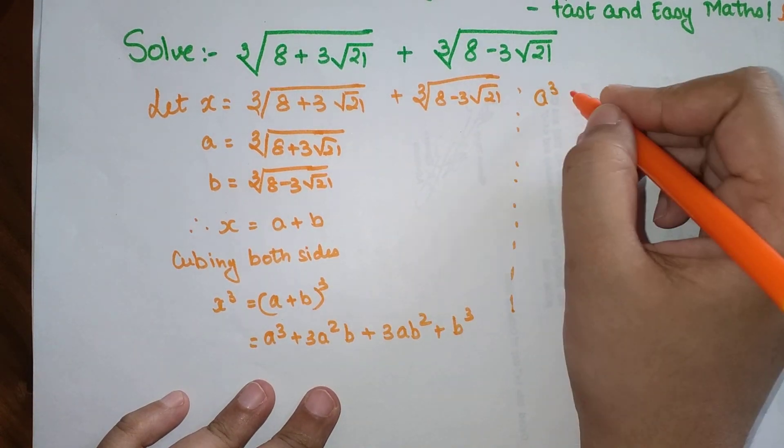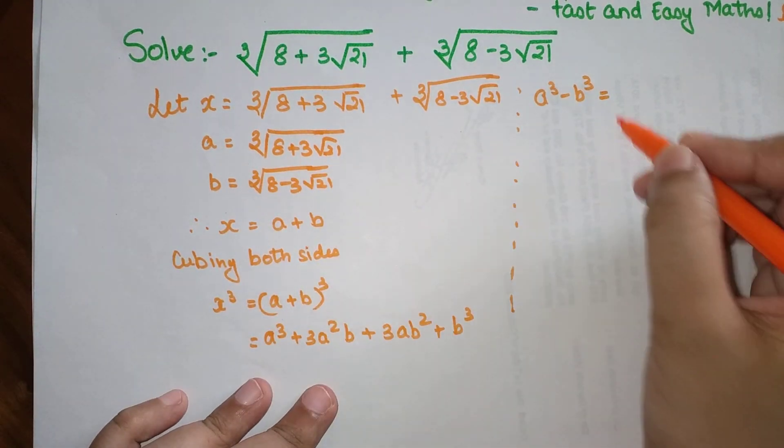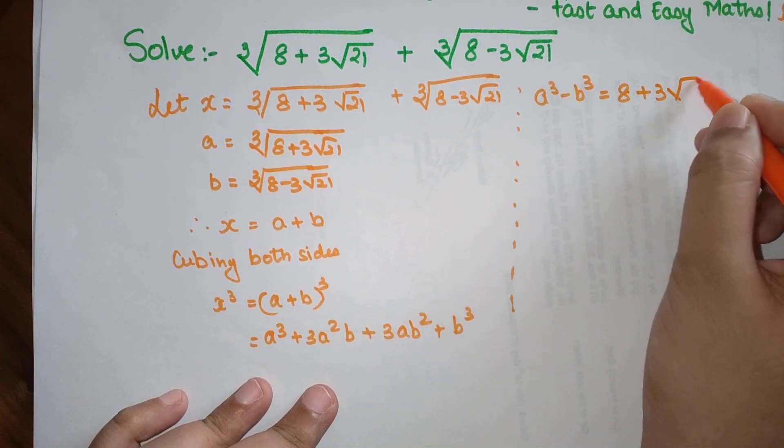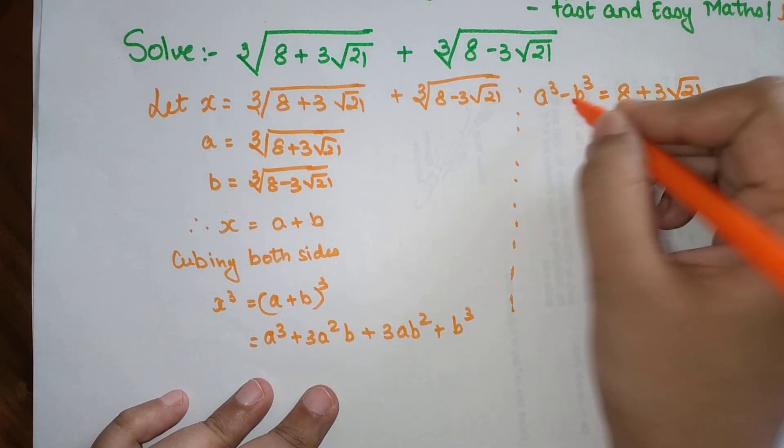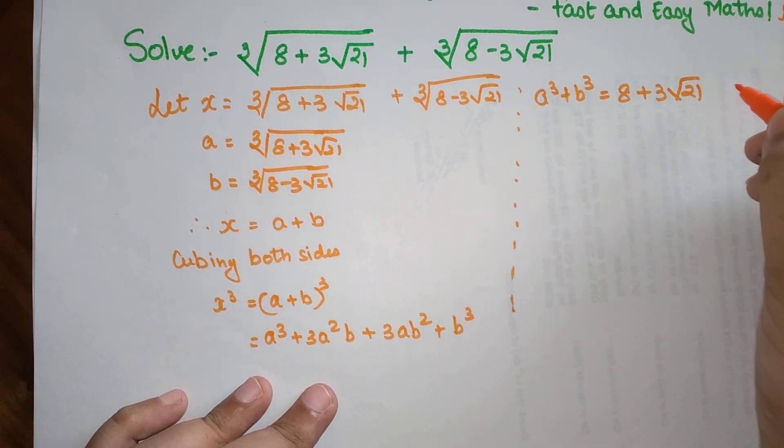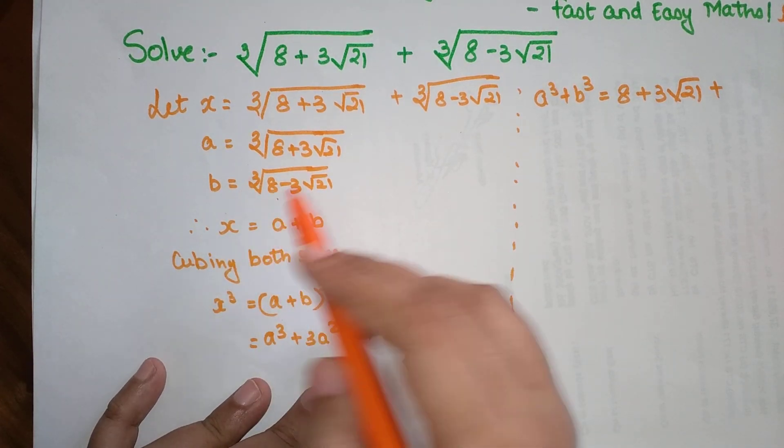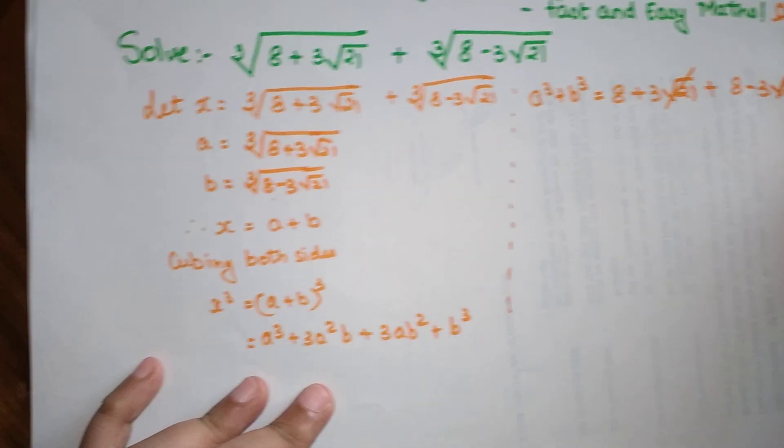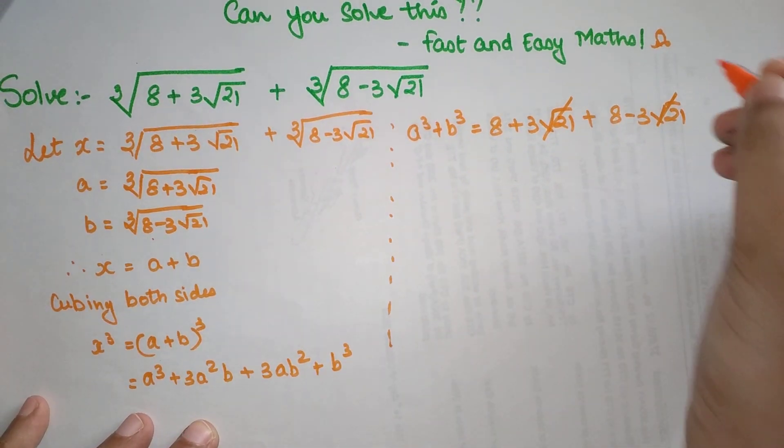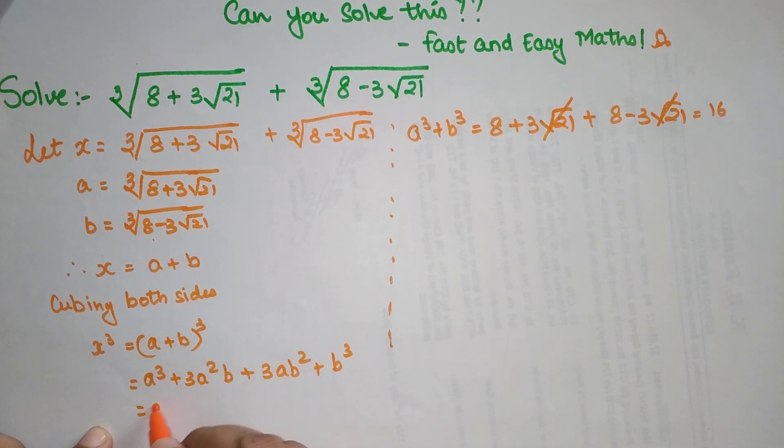Understand, let's look over here. What will be a cube plus b cube? A cube, when I cube this particular term, I'm just left with 8 plus 3 root 21. Plus again cube of this particular term will be just 8 minus 3 root 21, so this and this gets cancelled, so I'm just left with 16.